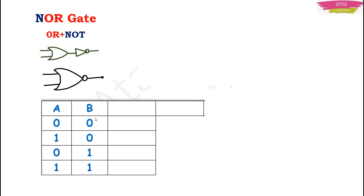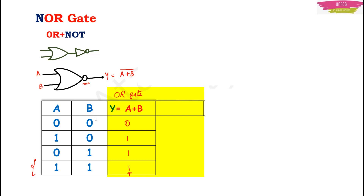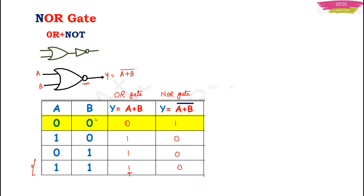What will be the truth table for the NOR gate? The inputs are the same, but the output will be different. The NOR gate output is the complement of the OR gate output. If both inputs are 0, OR gate output is 0, so NOR gate gives the complement — that is 1. If any one input is 1, OR gate output is 1, so NOR gate gives 0. If both inputs are 1, OR gate gives 1, and NOR gate gives the complement — that is 0. NOR gate is the opposite of OR gate.